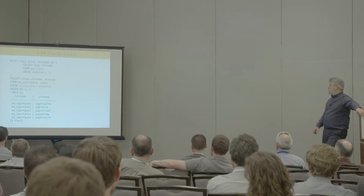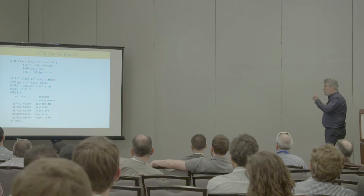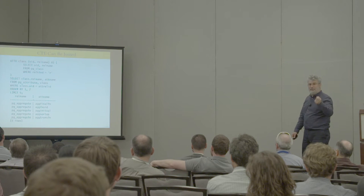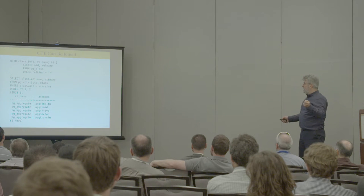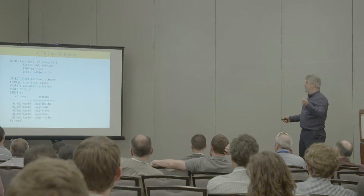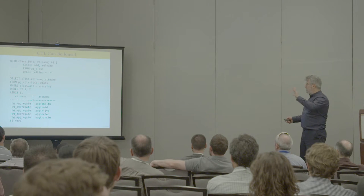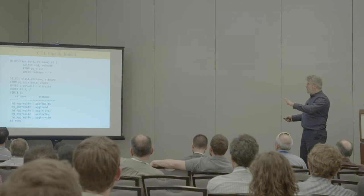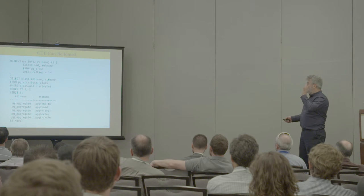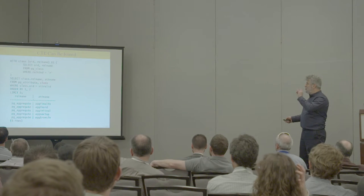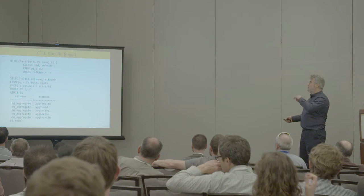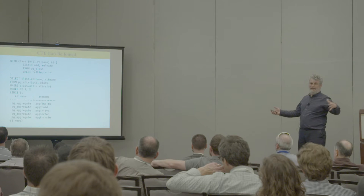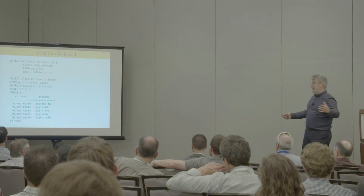Okay. So we can join to these common table expressions, these sort of fake tables that we create. Here's a case where, again, kind of contrived, we select a certain number of values from the pg_class table, we name the columns, and we then select, and we join the common table expression with another table, and then we return the results. Again, probably you'd never want to do this, but you kind of get the idea.